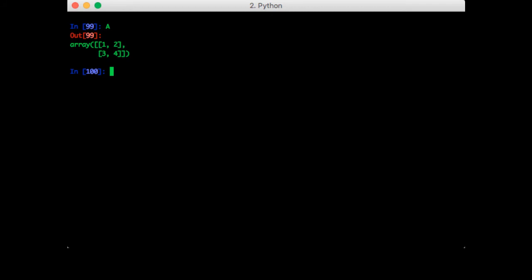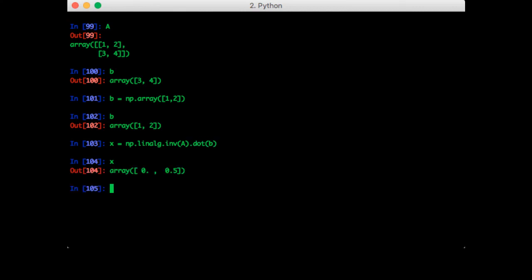So a is going to be one two three four, and b let's use one two. So the solution to this is x equals np.linalg.inverse of a times b. So the solution is 0 and 0.5. You can try solving that by hand to be sure.